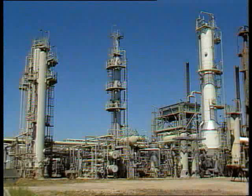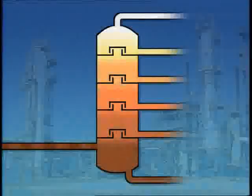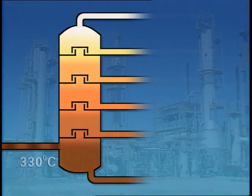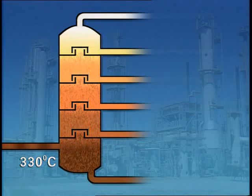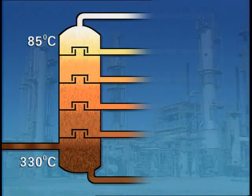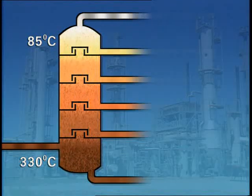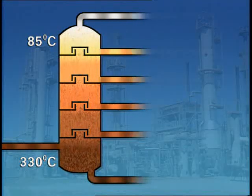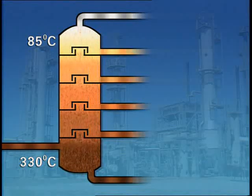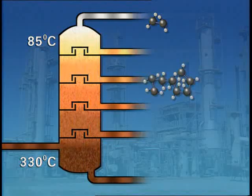Industry uses the same process, but on a mammoth scale, in huge fractional distillation columns. The hot oil enters near the bottom at a temperature of 330°C. The column becomes cooler towards the top. Fractions which remain as vapour at 85°C go straight to the top and are piped away. Different hydrocarbons condense at different temperatures, running off at various levels. Those with lower boiling points are collected at the top; those with higher boiling points run off nearer the bottom.